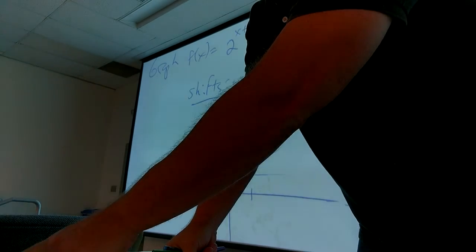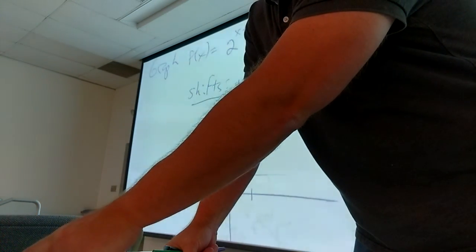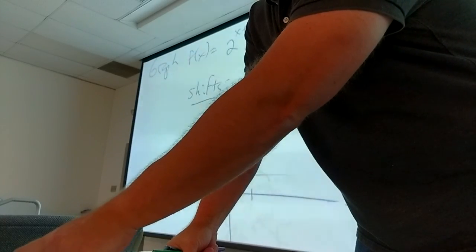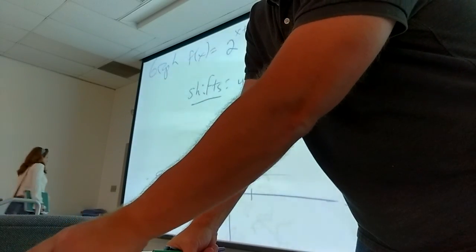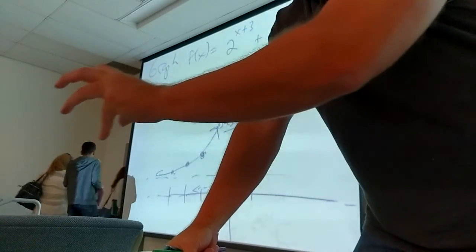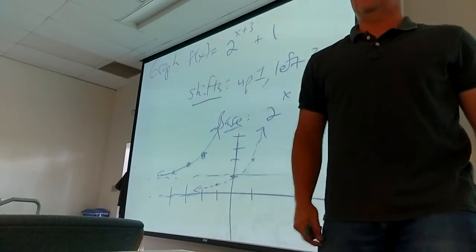When you add powers, you must be multiplying — so log base something of A plus log base something of B is log base something of AB.